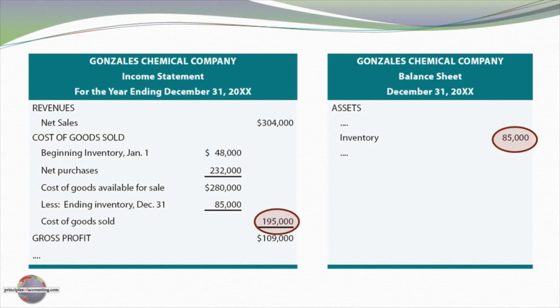On the financial statements, our ending inventory of $85,000 appears on the balance sheet. Our cost of goods sold of $195,000 appears on the income statement. Beginning inventory of $48,000 plus purchases of $232,000 gives us cost of goods available for sale of $280,000, minus ending inventory of $85,000, gives us cost of goods sold of $195,000. Sales of $304,000 minus $195,000 gives us gross profit of $109,000 under FIFO.